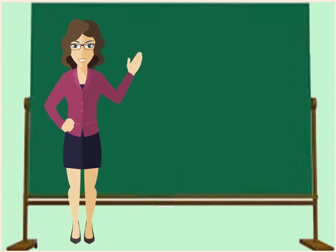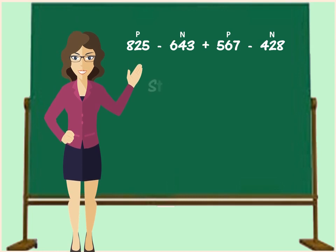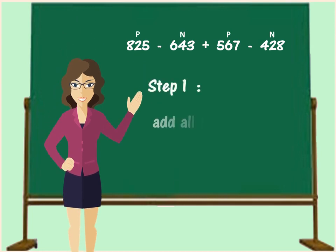Now let us learn how to solve such sums. Mixed addition and subtraction is always solved in three steps. But before we begin with the first step, we must identify the positive and negative numbers which we have already done. So let us begin with the first step. Step 1: Add all the positive numbers.